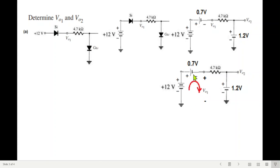Now, in solving this loop, we can find V01. By KVL equation, we start from here: negative 12 plus 0.7 plus V01 equals 0. Therefore, V01 is equal to 11.3 volts.